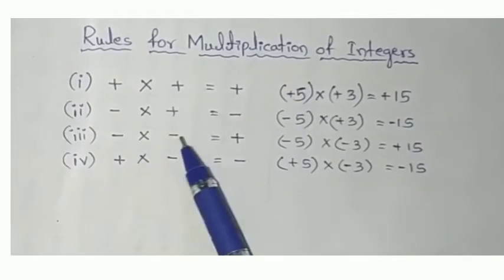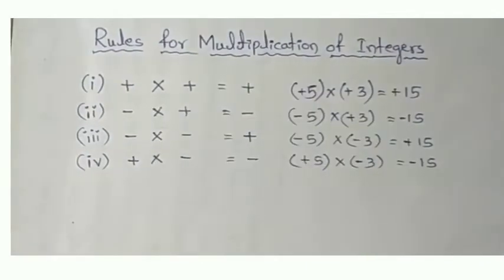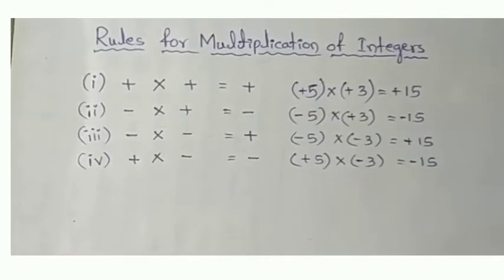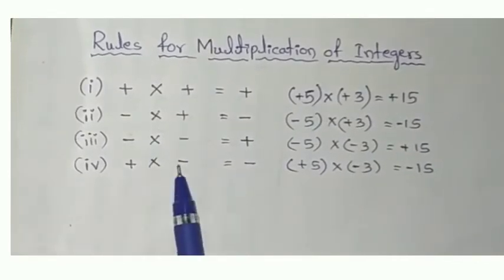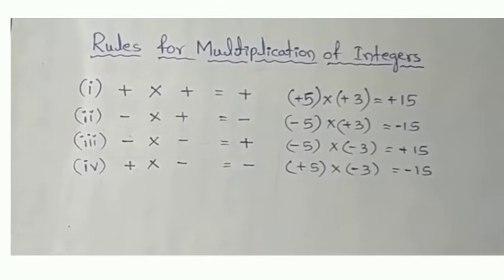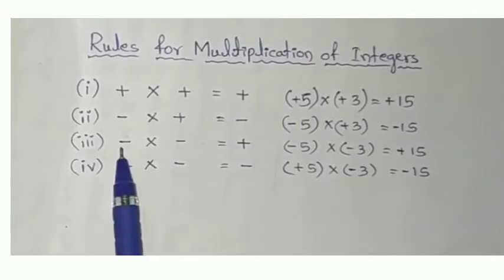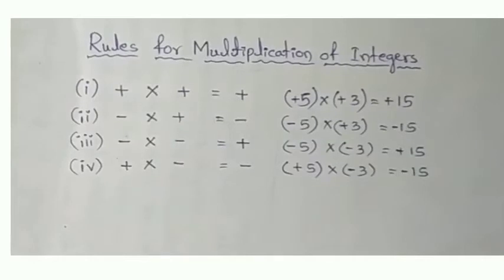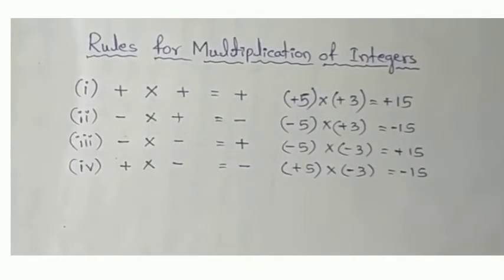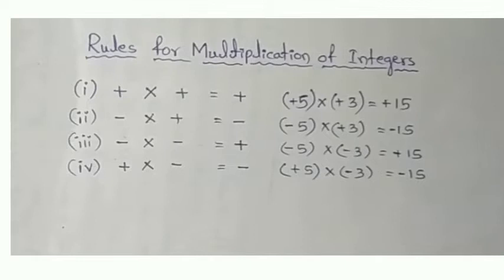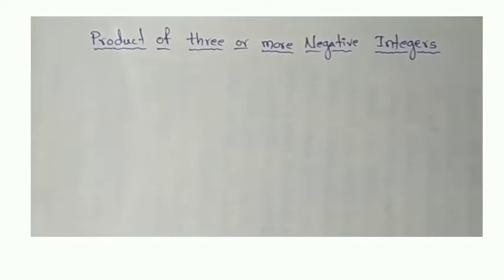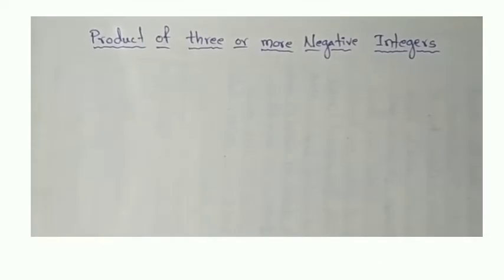So, like that, we have to use the sign rules. In the textbook, the same thing — they mentioned multiplication of positive and negative, multiplication of negative integers, and another concept: product of 3 or more negative integers.